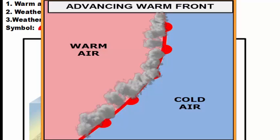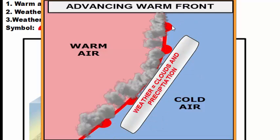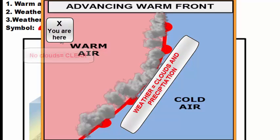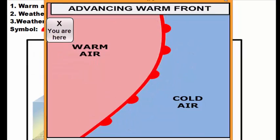Looking at another diagram, here we have our cold air and here we have our warm air advancing. As the warm air advances we have our clouds form at the front. Because the semicircles are pointing in this direction, the front is moving in that direction. If you're located way behind the boundary away from the clouds, you're going to have clear conditions, and because you're in the warm air you're going to have warmer temperatures.